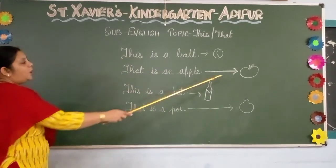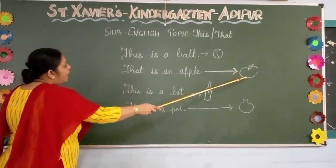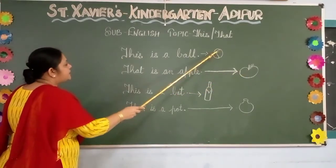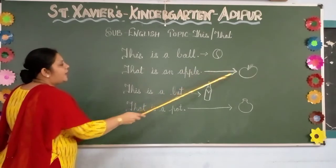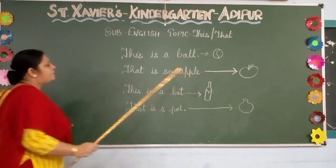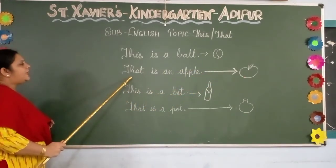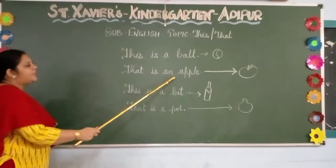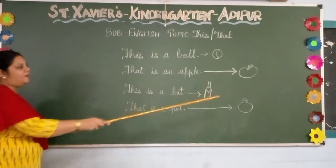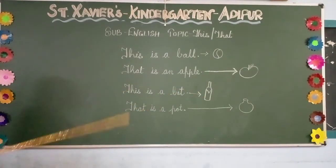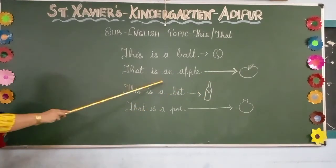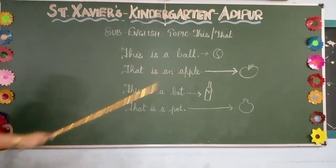Now the apple is far. You can see the ball is near and the apple is far. So you say, 'That is an apple.' What will you say? That is an apple.